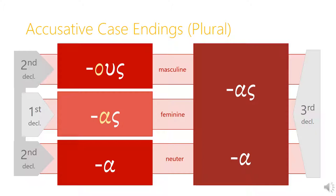A couple of things to notice. The alpha ending is used for the accusative neuter plural both in the second and in the third declension. Also, the -as ending that is typical of the first declension is the same as the -as ending used by both masculine and feminine third declension nouns. So it's important to keep in mind what declension your noun is, because when you see that -as ending, it might make you think it's a first declension feminine noun — but if it's a third declension noun, that -as ending could be on a masculine noun as well as a feminine noun.